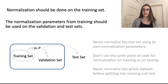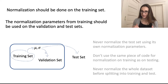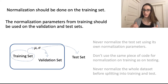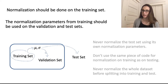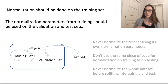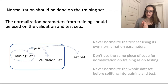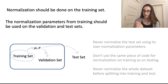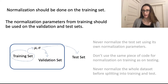You must never normalize the test set using its own normalization parameters, because if you did, that's actually leakage — it carries information from other data in the test set to the predictions for a particular test point, which you should not do.